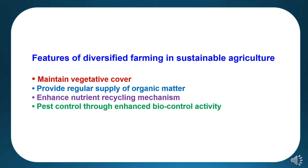Features of diversified farming in sustainable agriculture: Diversified farming systems contribute a role in maintaining vegetative cover by combination of various crops in a given crop area. It provides regular supply of organic matter, having a role in enhancing nutrient recycling mechanisms and pest control through enhanced biocontrol activity mechanisms.